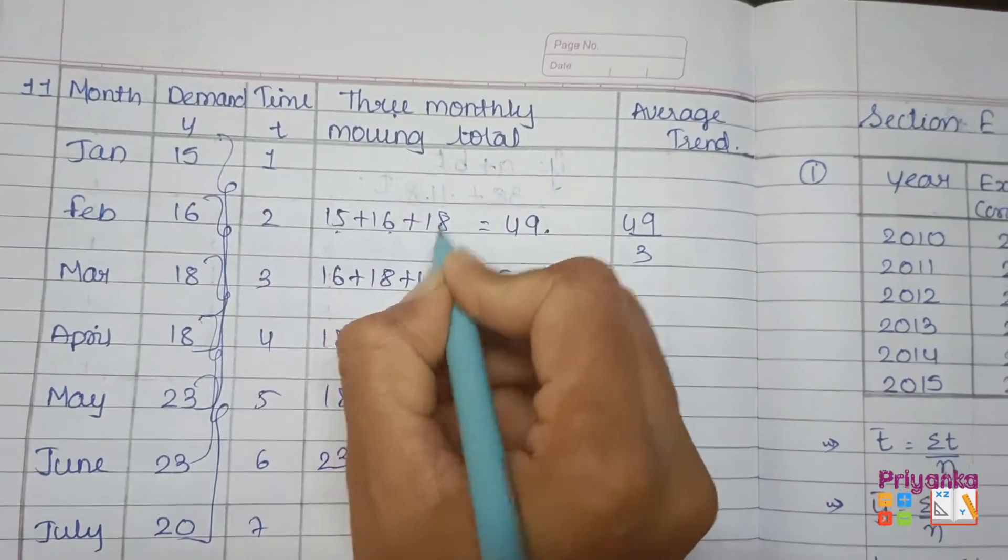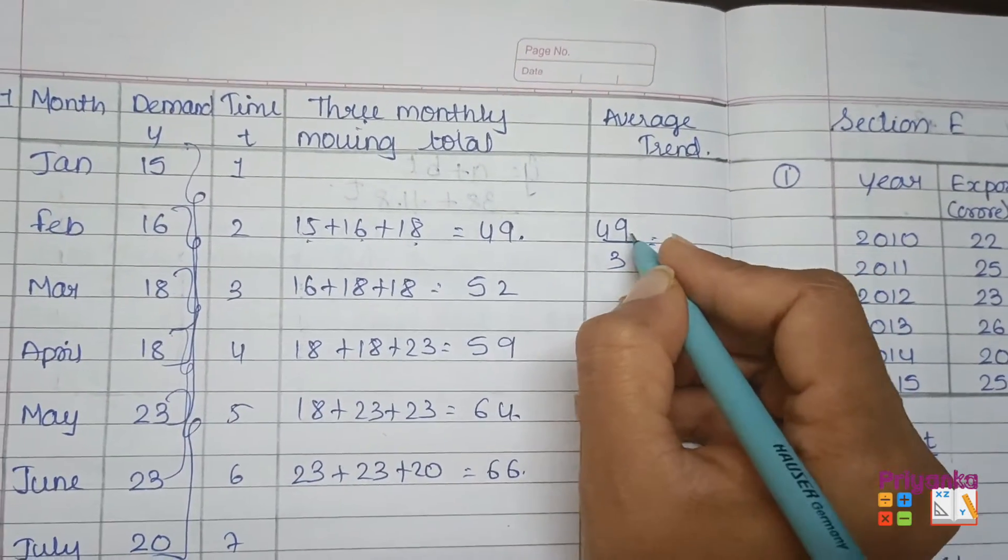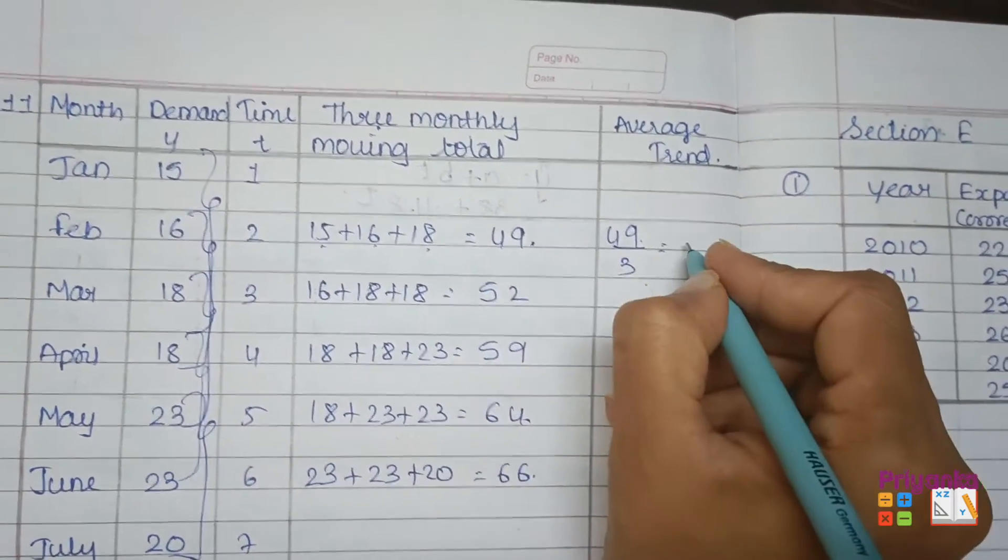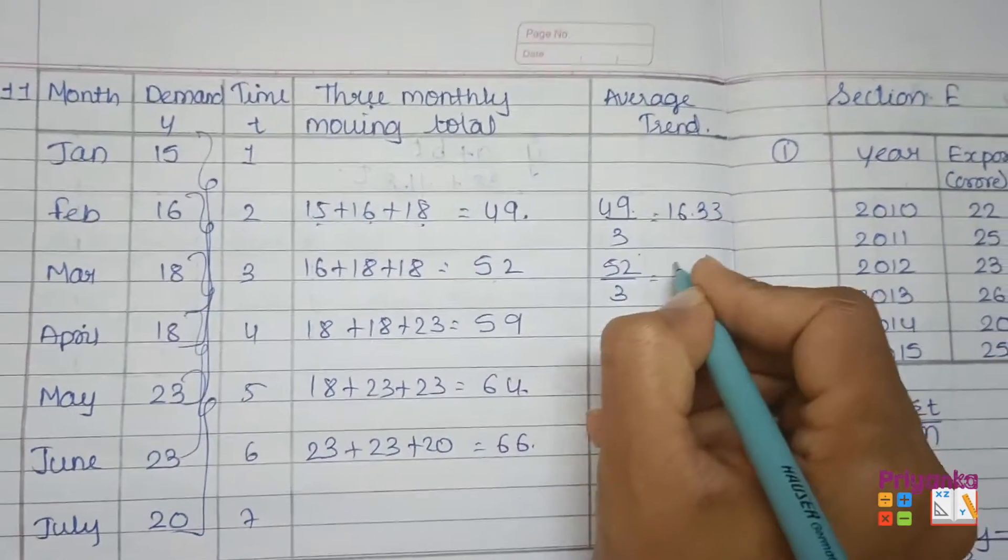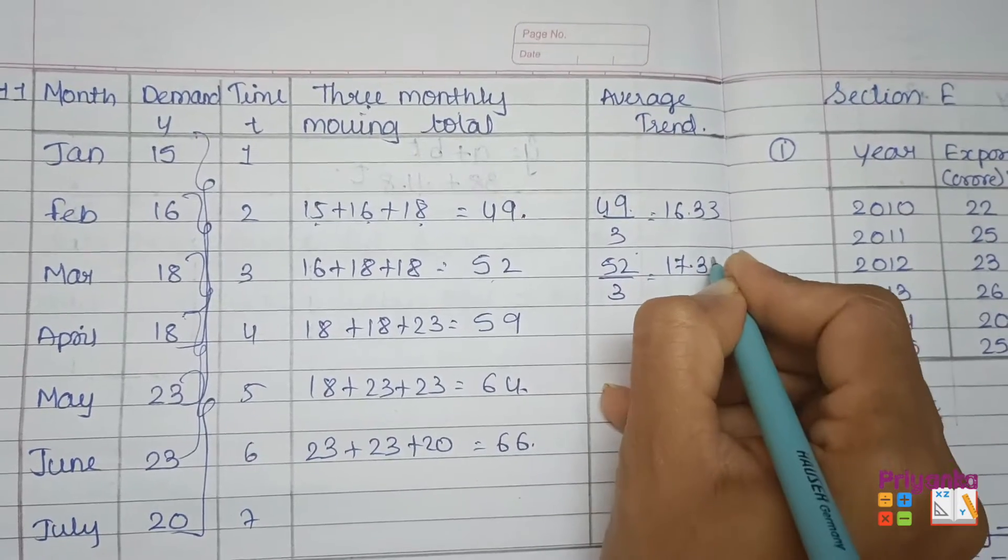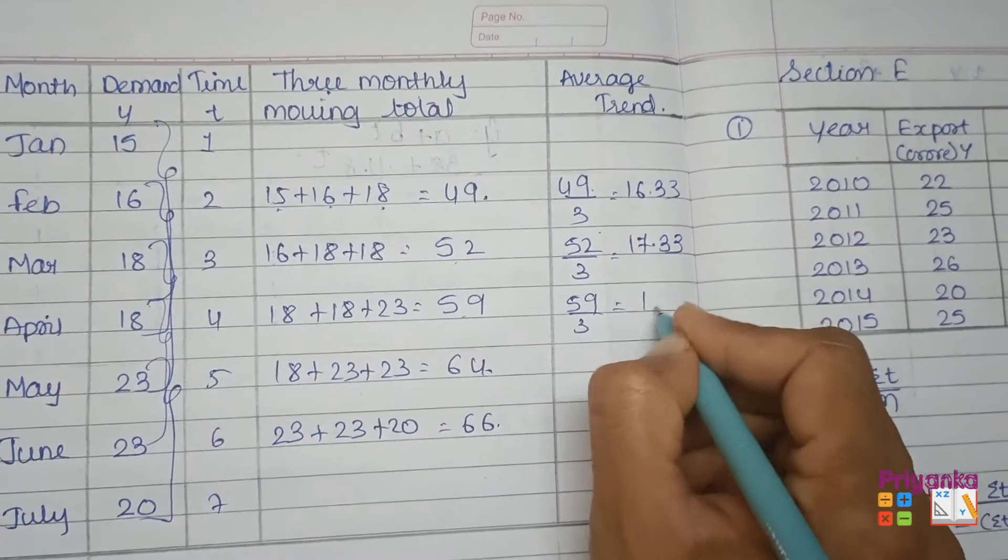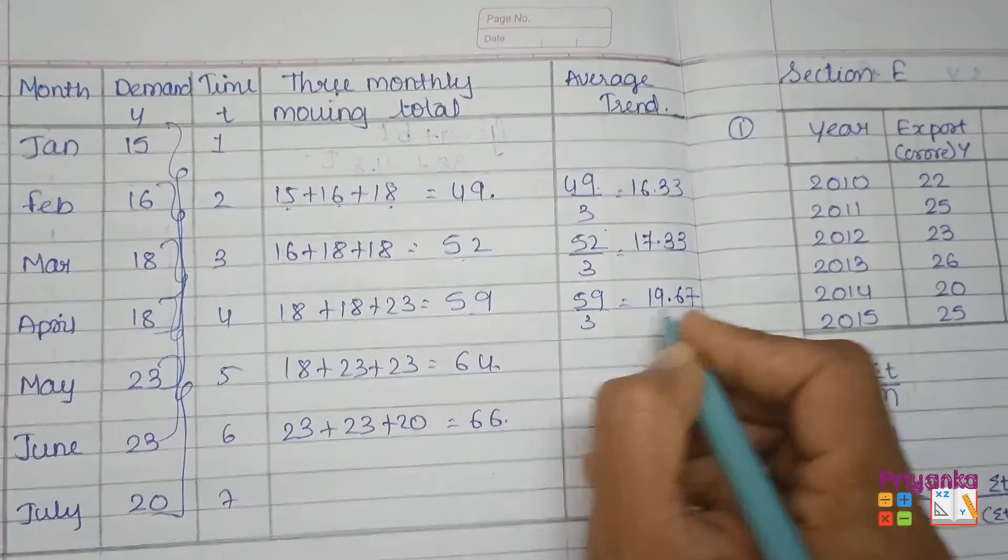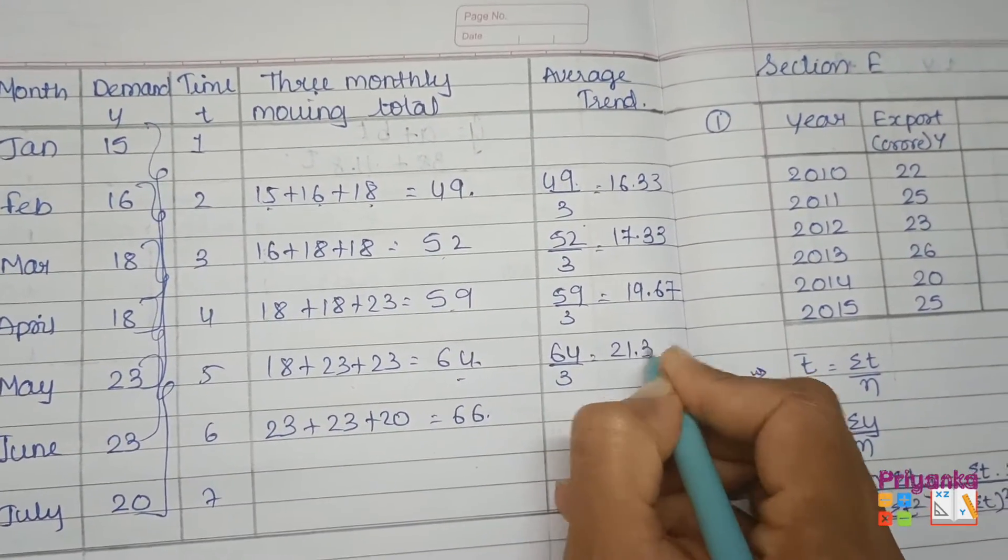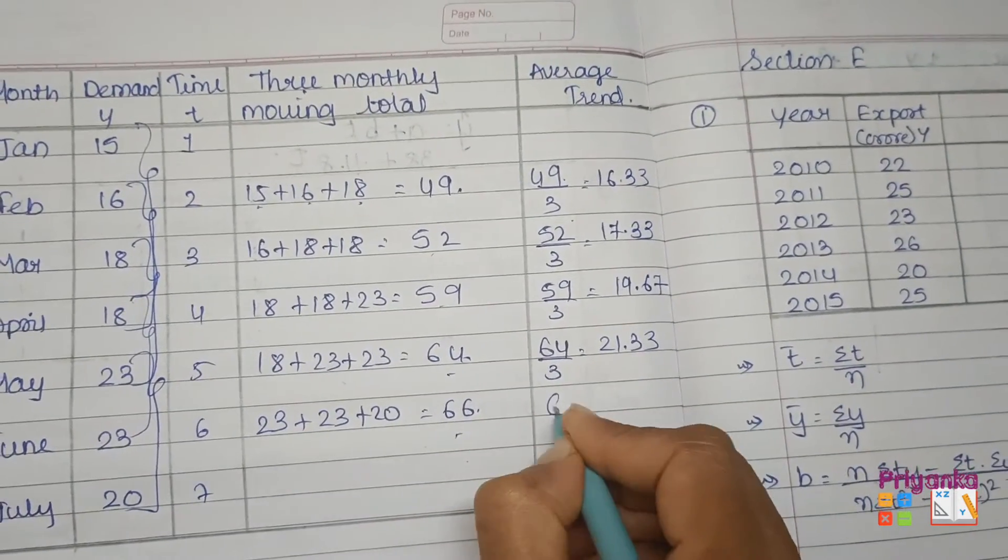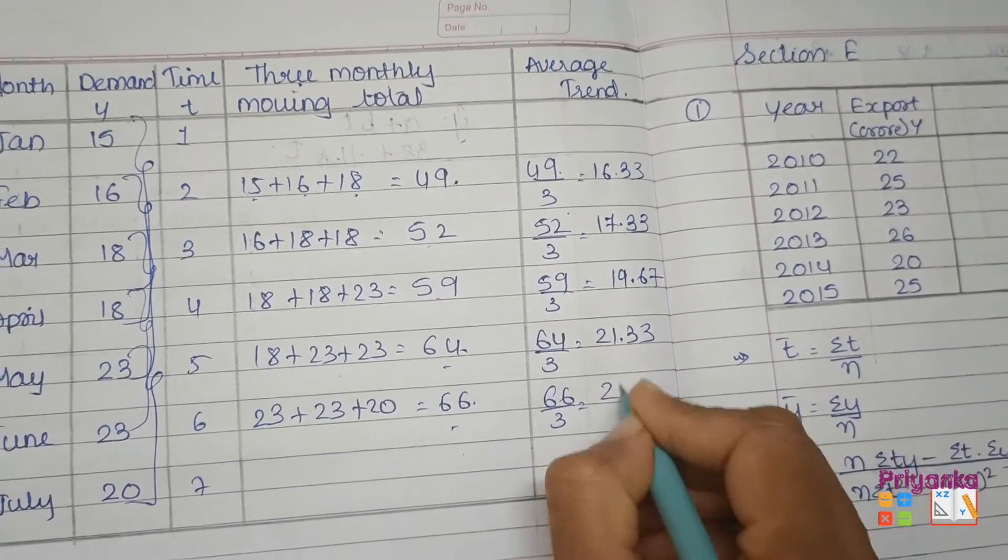Average trend is just division with the three numbers as we are using three monthly moving total. Here average trend, just divide 49 by 3, you'll get 16.33. The next 52 divided by 3, here we get 17.33. The next 59 divided by 3, that is 19.67. Next take 64 divided by 3, here we get 21.33. The last one 66 divided by 3, you will get the answer 22.